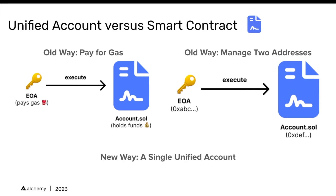In the previous video, we also talked about having your gas sponsored for you, which is a really nice benefit of account abstraction — someone can sponsor the gas on your behalf, or you could pay for it with an ERC-20 token or some other method.